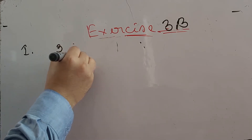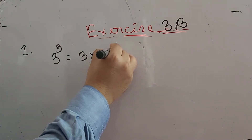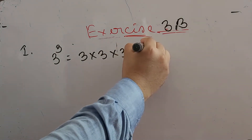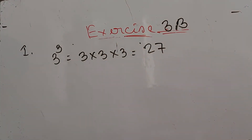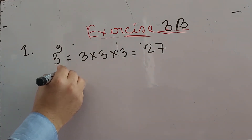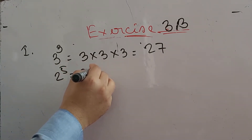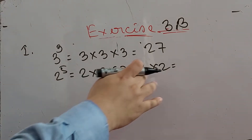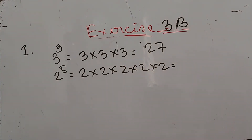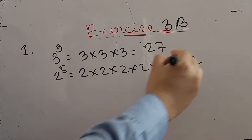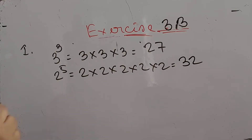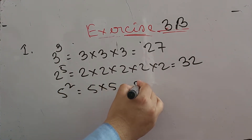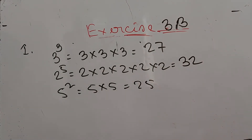First one: three cube means three into three into three, that means three threes are nine, nine times three is twenty-seven. Then two to the power five means two into two into two into two into two, that means two to the four is four, four times two is eight, eight times two is sixteen, sixteen times two is thirty-two.